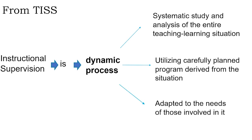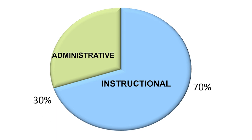Instructional supervision is a dynamic process — a systematic study and analysis of the entire teaching-learning situation, utilizing a carefully planned program derived from the situation and adapted to the needs of those involved. The role of the school head is really more of an instructional supervisor. Seventy percent of your time should be spent on instructional supervision and leadership, while administrative tasks like liquidation and financial management should only be 30%.